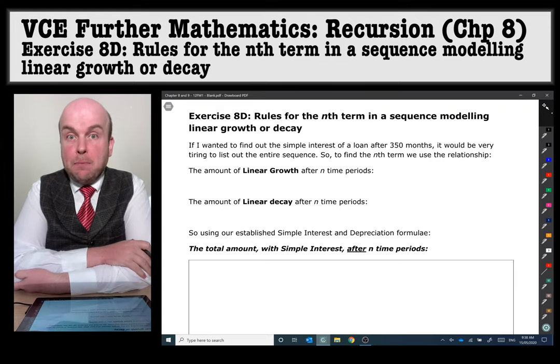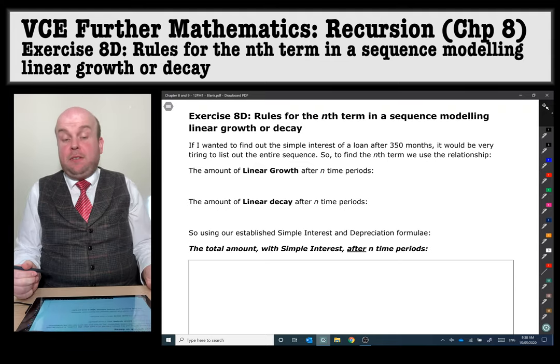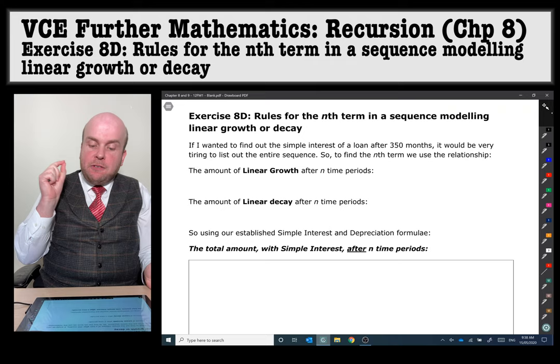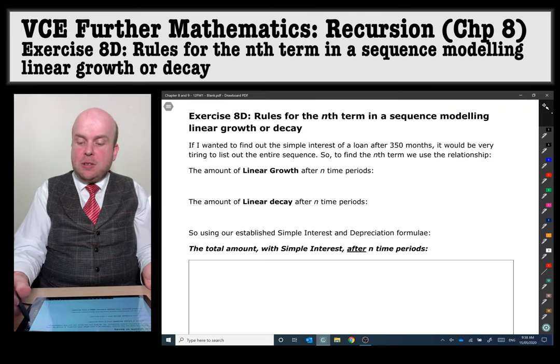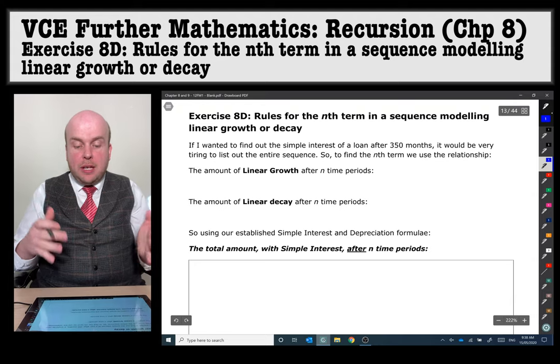If I wanted to find out the simple interest for a loan after 350 months it would be very tiring to find the entire sequence. So to find the nth term, and that just means a specific number in the term, we use a relationship.